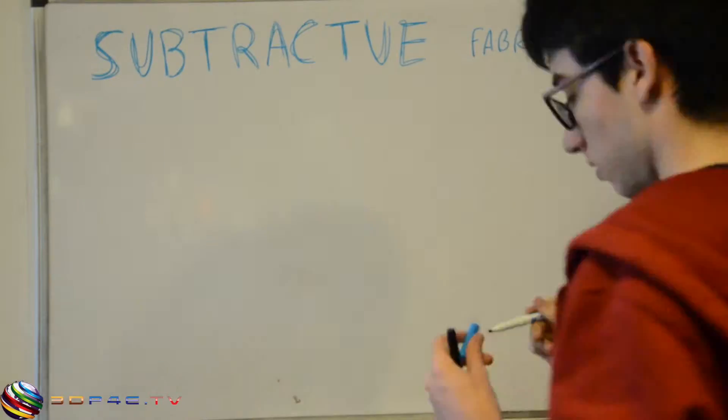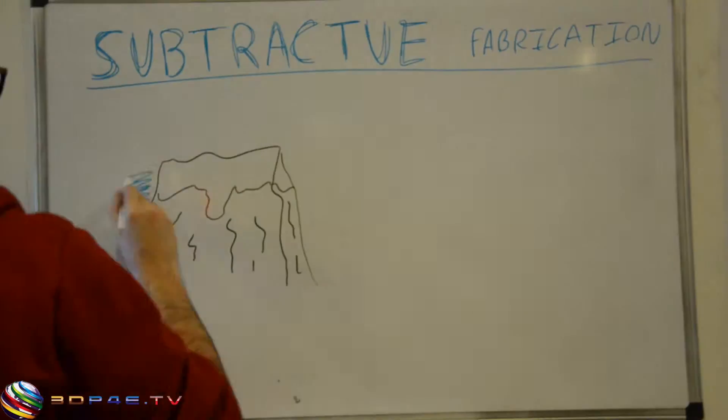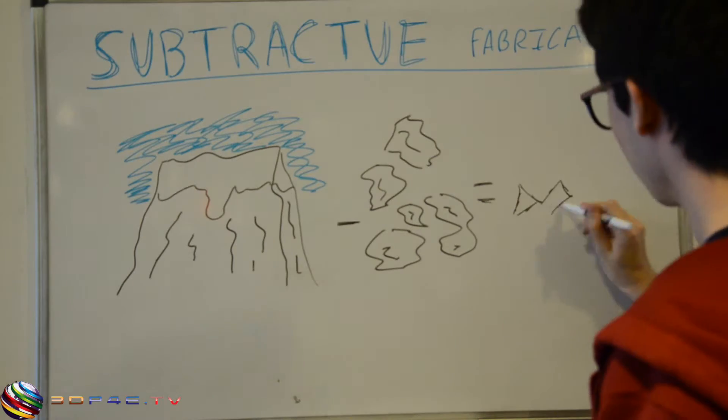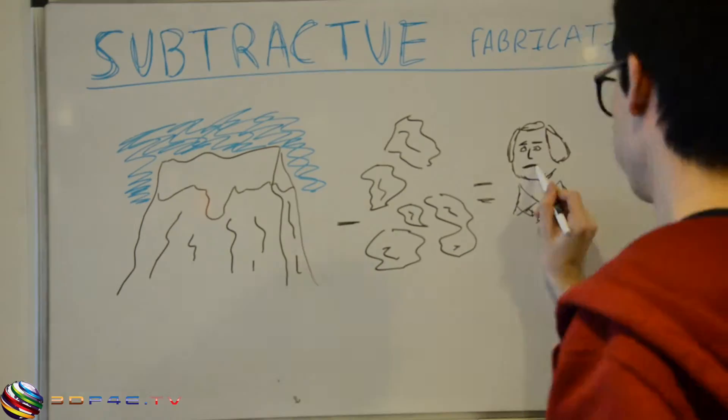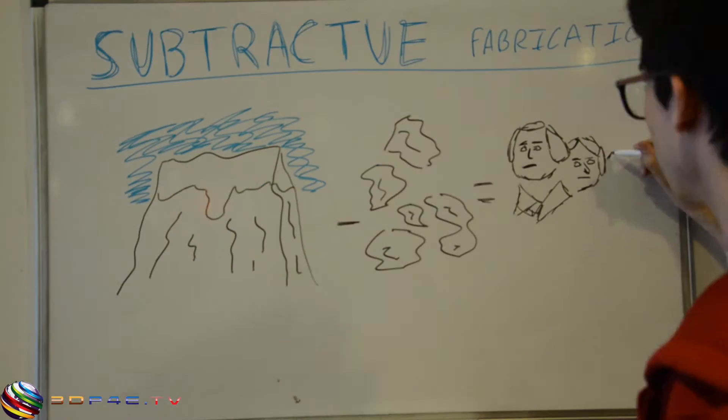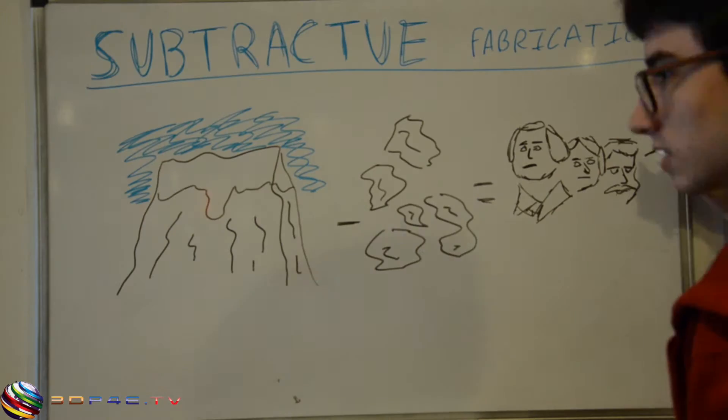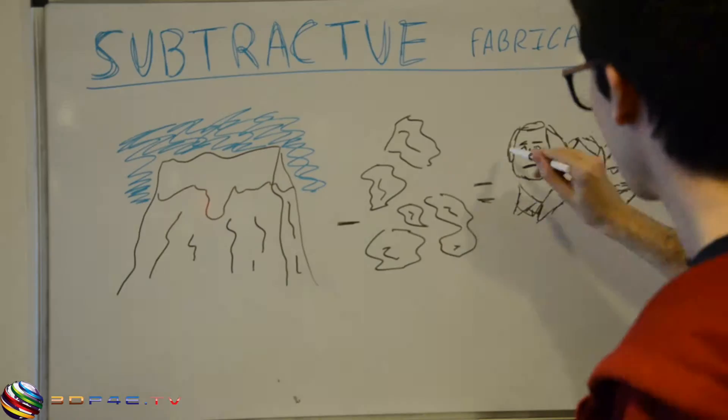The other half of digital fabrication is subtractive manufacturing. Through this process, excess layers of a base material are removed until only the essential parts of whatever is being made remains. This might sound a bit more confusing, so let's clear it up.